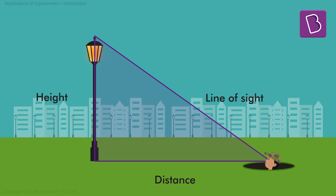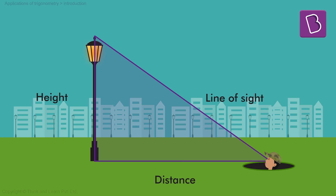So one side — the vertical side — is our pole. The horizontal side is the distance between the base of the pole and my eye. And the third side is my line of sight. We have a triangle. All we need to do is measure one side of this triangle.